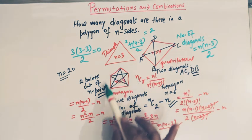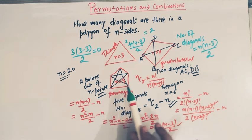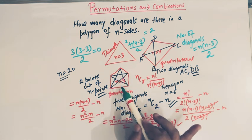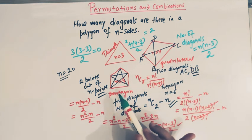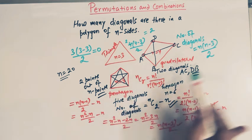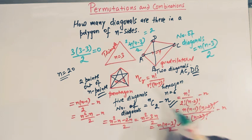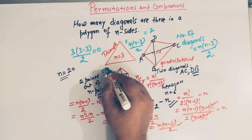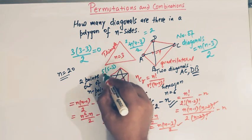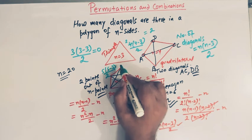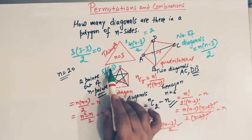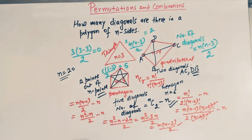Similarly, for a pentagon we drew 5 diagonals. Let us verify: with n equal to 5, we get 5 times (5−3) divided by 2, which is 5 times 2 divided by 2. The 2s cancel, leaving 5. So a pentagon has 5 diagonals — confirmed.